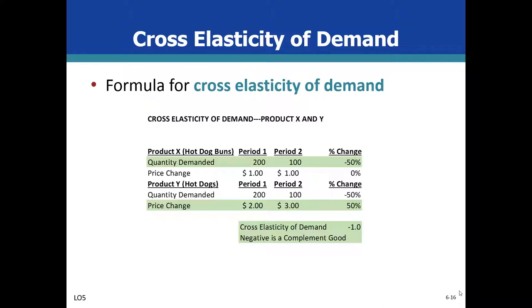We do the calculation and find that the cross-elasticity of demand is negative one. From the previous chart, we know that a negative result would indicate that the goods complement one another.